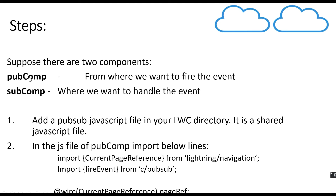Suppose I have two components. First is a Pub component and second is a Sub component. The Pub component is a component from where I want to fire an event on a certain button click or something like that. And the Sub component is a component where I want to handle the event fired by the Pub component. For this, the first thing we need to do is include a JavaScript file named PubSub in your LWC directory. It is nothing but a shared JavaScript file which your two components will be using to communicate between themselves.